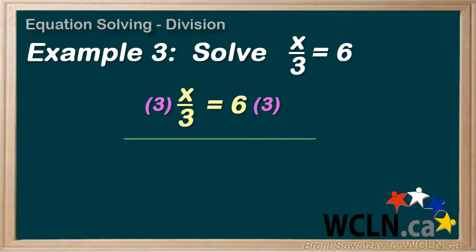So let's draw a divider here. And on the left, the 3's cancel out and leave us with our x. We've isolated the x. And to finish up, on the right, we have 6 times 3 equals 18.